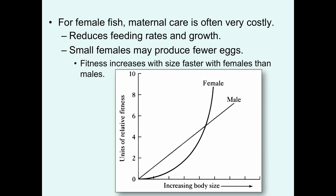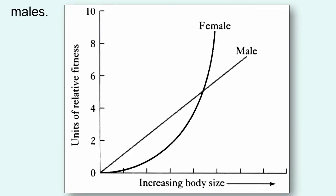For female fish, sometimes maternal care is significantly more costly than it is to males. If maternal care significantly reduces their feeding rate and growth rate, this can decrease the likelihood of them producing eggs in the future. Small females produce many fewer eggs than large females. We see fitness increase with size more rapidly in females than in males, as shown in this figure. So there is a higher relative cost in some fish for maternal care, which might predispose male care.